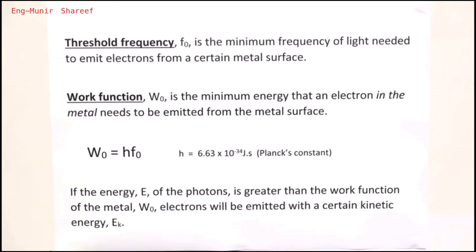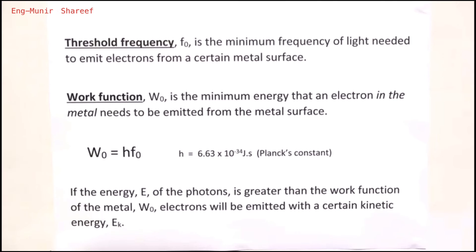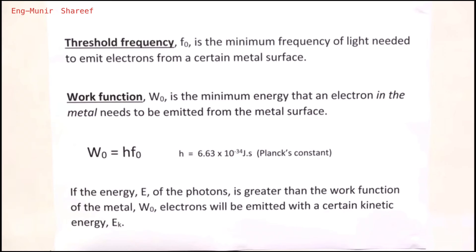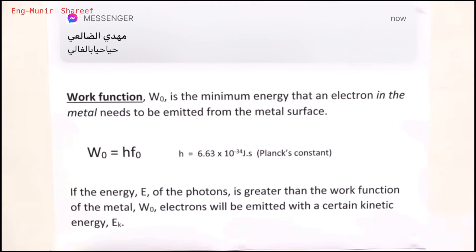The threshold frequency, or cut-off frequency, is the minimum frequency of light needed to emit electrons from a certain metal surface. The symbol used is a small letter f with a subscript zero. Please make your subscripts look like subscripts — many students are penalized in tests and exams because subscripts are written too high or too big. The work function, symbol capital W with subscript zero, is the minimum energy that an electron in the metal needs to be emitted from the metal surface.